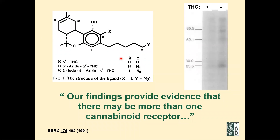Among the compounds we made at the time was delta-8-THC — a tricyclic ring with five carbons. The delta-9 has its double bond in one position, the delta-8 in another. We made the delta-8 because it is more stable, with almost the same efficacy as delta-9-THC. We made photo-affinity labels and could see bands on a gel. We saw a second band and thought there may be more than one receptor — this was the first indication of a CB2 receptor.